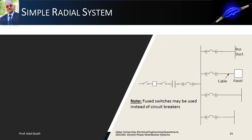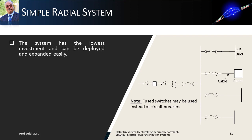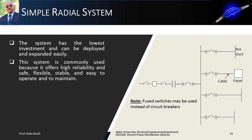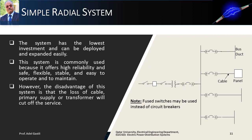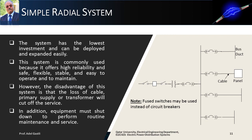This schematic diagram shows a simple radial type system. The system has the lowest investment and can be deployed and expanded easily. This system is commonly used because it offers high reliability, and is safe, flexible, stable, and easy to operate and maintain. However, the disadvantage of this system is that the loss of cable, primary supply, or transformer will cut off service to all customers. In addition, equipment must shut down to perform routine maintenance and service.